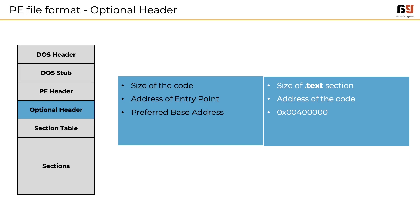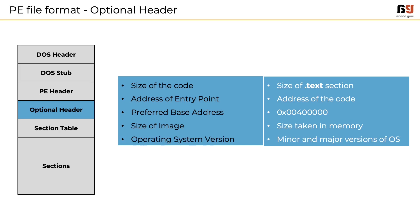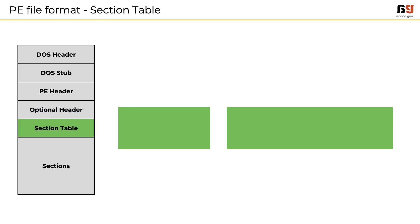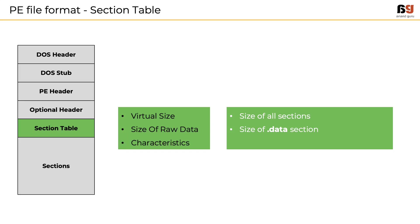The optional header also contains the size of the image, which is the total size including all headers as loaded in memory, and the operating system version referring to minor and major OS versions. Next, we have the section table, which holds information like virtual size — the total size of the section when loaded into memory — size of raw data, which is the size of initialized data on disk, and characteristics: flags that describe the properties of a section, such as whether it is readable, writable, or executable.